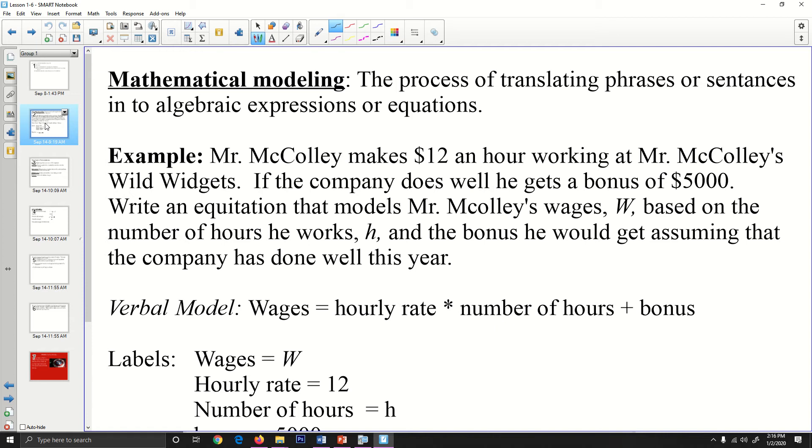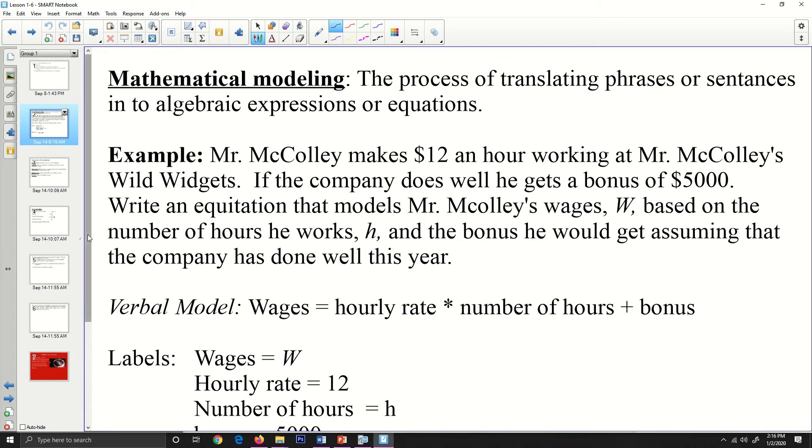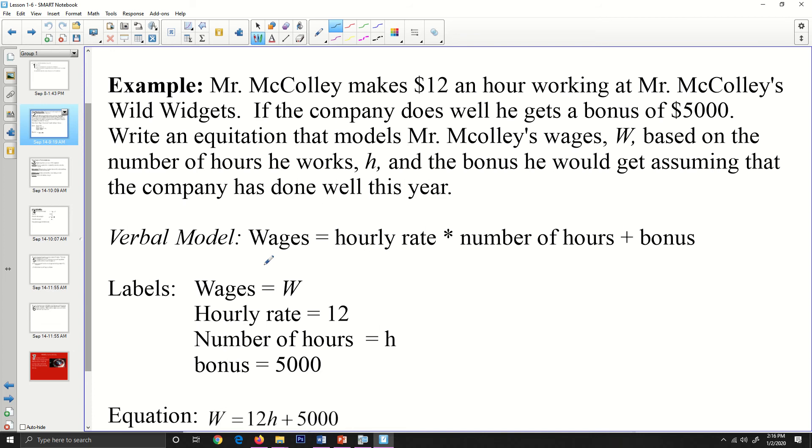Here's an example. Mr. McCulley makes $12 an hour working at McCulley's Wild Widgets. If the company does well, he gets a bonus of $5,000. Write an equation that models Mr. McCulley's wages, W, based on the number of hours he works, h, and the bonus that he would get assuming that the company has done well this year. My verbal model is basically my wages is going to be my hourly rate times the number of hours plus the bonus.